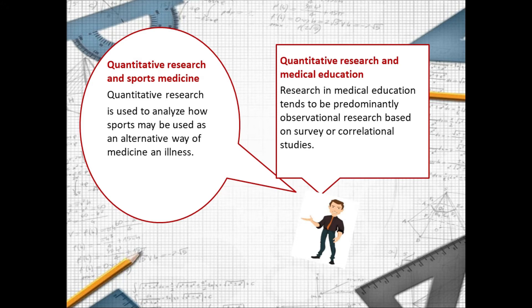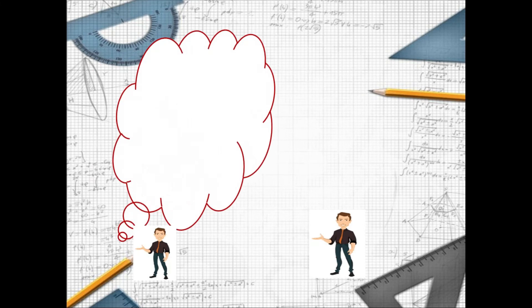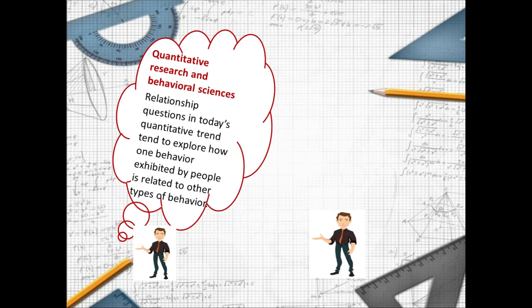It is also used for observational trials until we discover the vaccine. Quantitative research across behavioral sciences. Relationship questions in today's quantitative trend tend to explore how one behavior exhibited by people is related to the other types of behavior.